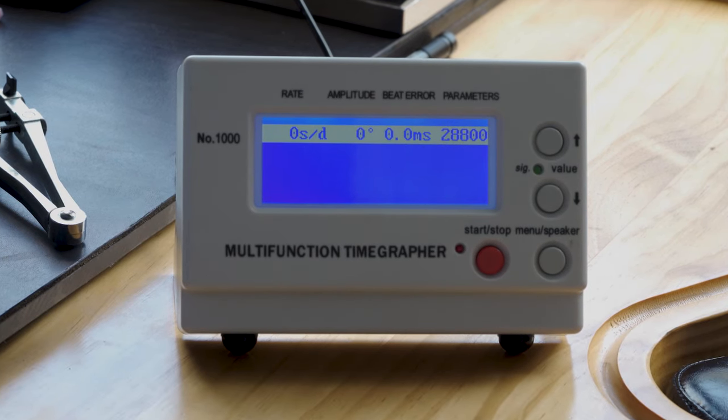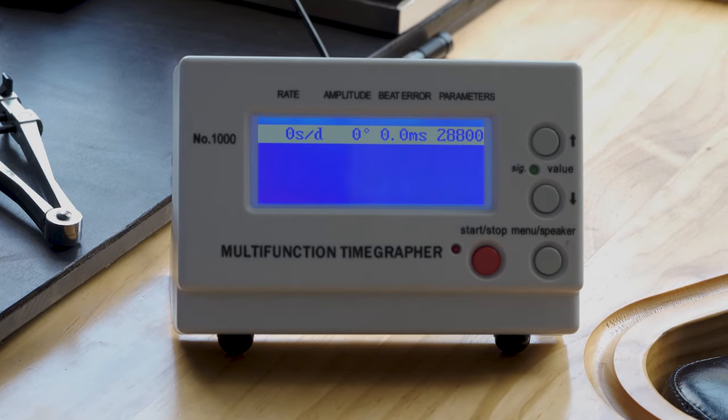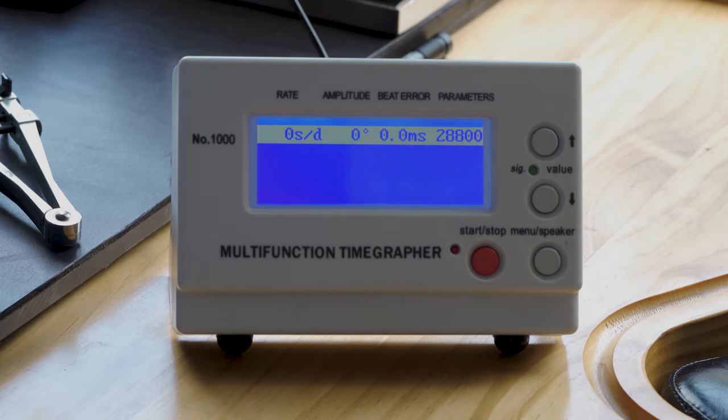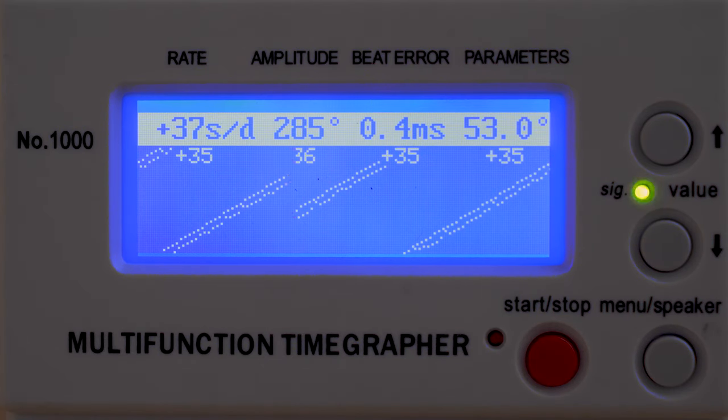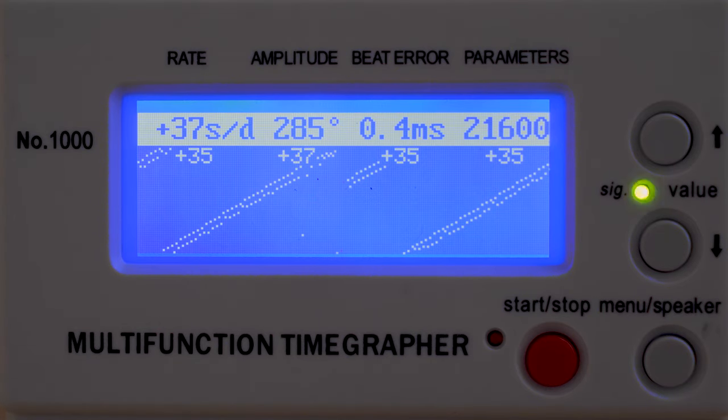The time grapher is an important tool for watchmakers. We can use it to observe how well a movement is functioning. It uses a sensor to listen to the movement and displays a visual representation and a stream of readings, which we can use to check if a watch is accurate or needs any servicing.